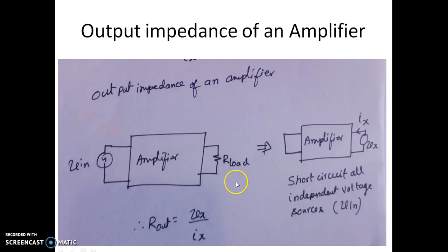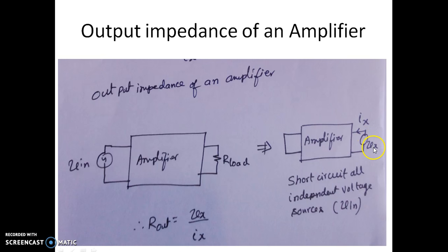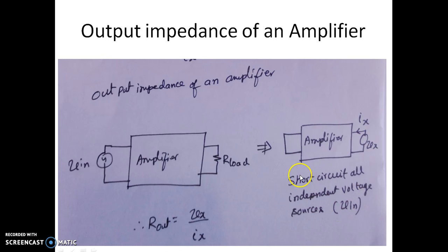Similarly, to find the output impedance of an amplifier, with the input voltage applied and the load resistor present, we connect a dummy source Vx in place of the load resistor and measure Vx/Ix, which gives Rout. Most importantly, we must short circuit all independent voltage sources. The input voltage Vin is an independent source, so we replace it with a short circuit, making the input voltage zero. The ratio Vx/Ix then gives the output resistance.